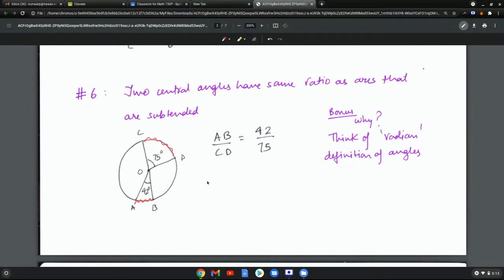But what we know is that the length of this arc divided by the length of this arc is going to be 42 over 75, because those are the ratios of the angles. Here's a bonus question: why does this work? Think of the radian definition, and that should tell you why they have to be in the same ratio.